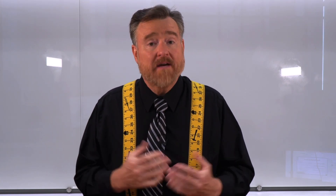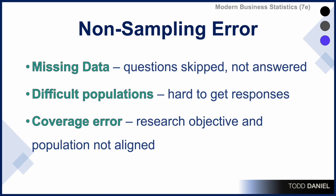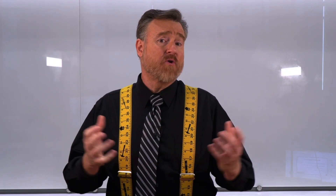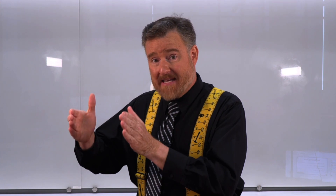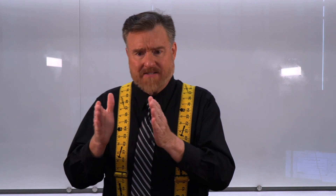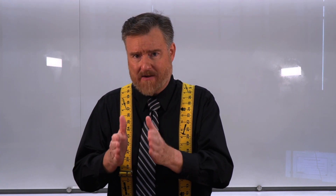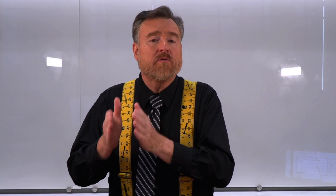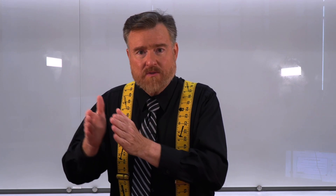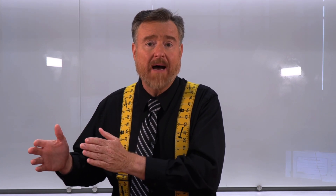Another form of non-sampling error is coverage error, where the research objective and the population are not aligned — essentially, asking the wrong people. This could occur if you want to know something about one group, and yet you can't get access to that group, so you ask someone adjacent to that group. Similar to, related to — however, what you learn from those individuals may not actually apply to the group that you want to know about.